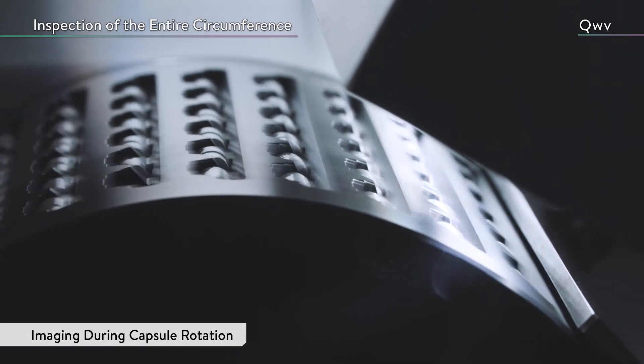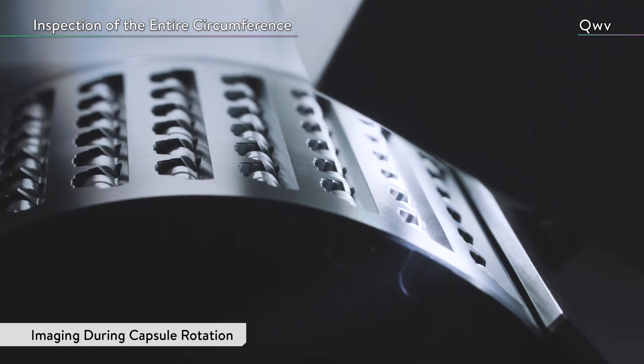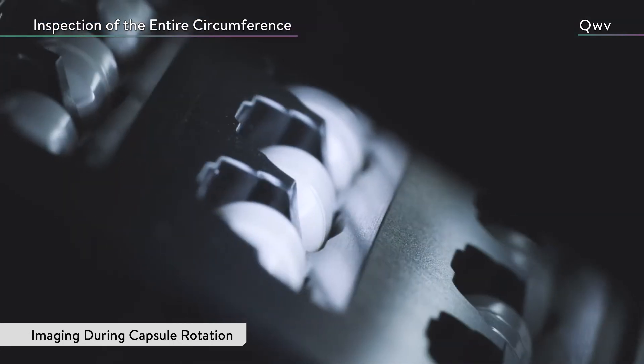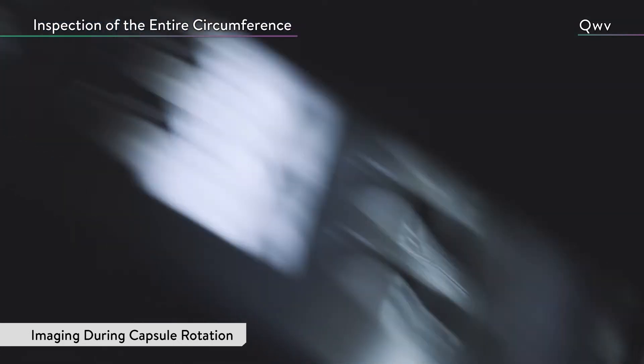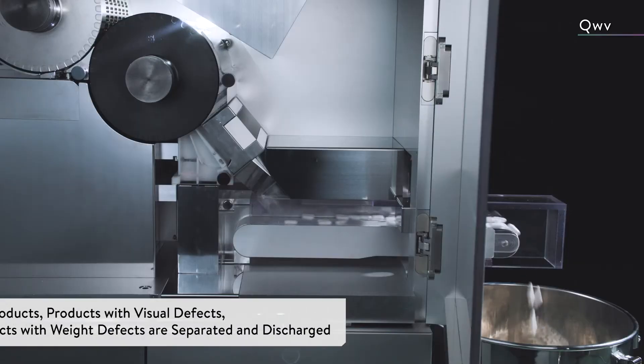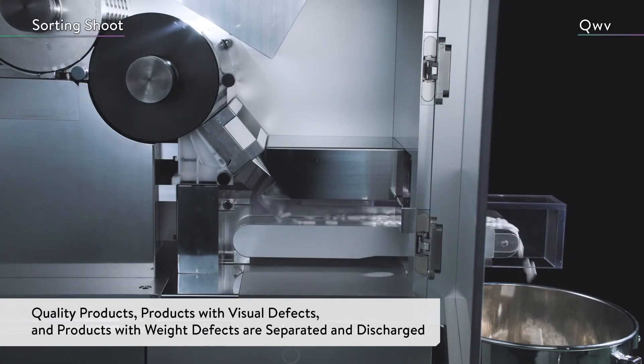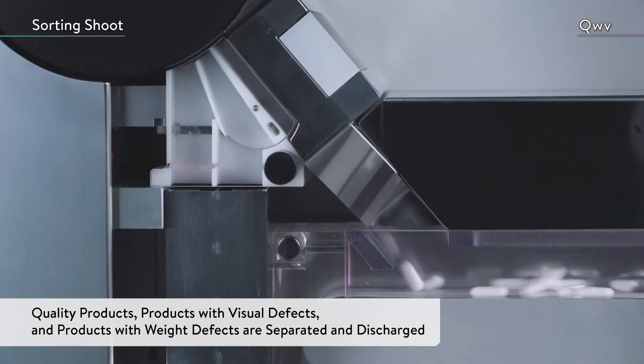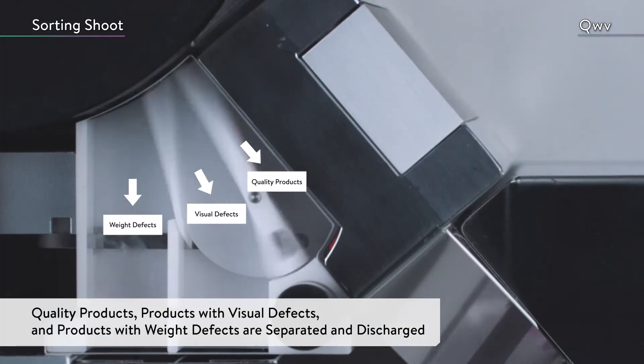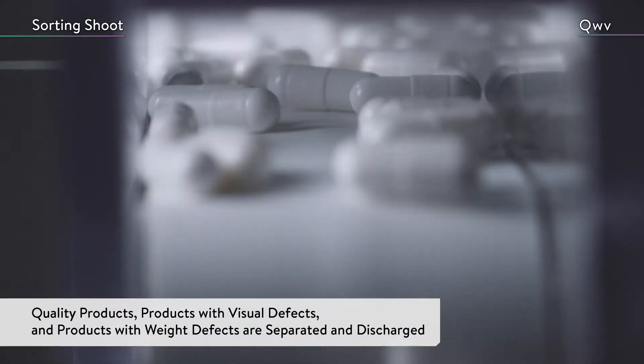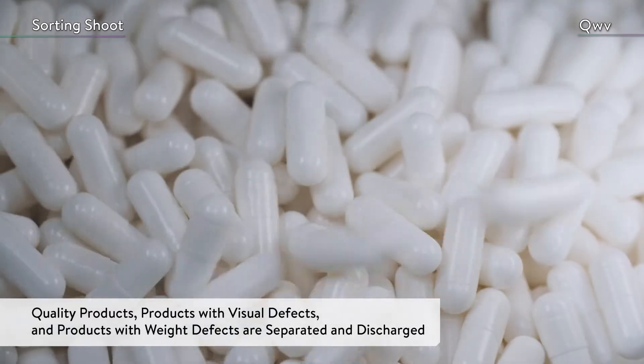Here, the capsules are rotated while their circumferences are imaged and inspected. Depending on the results of the visual inspection and the weight inspection, the sorting chute separates and discharges the products into three categories: quality products, products with visual defects, and products with weight defects.